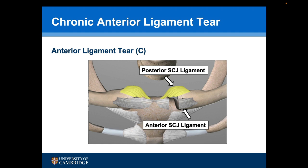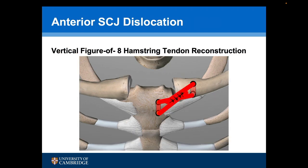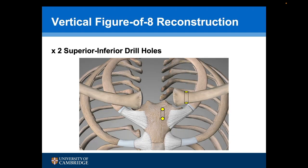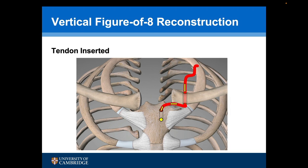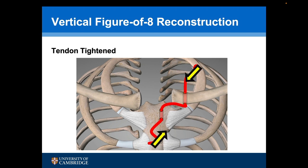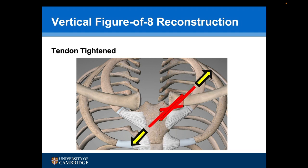The second pattern of injury is where the anterior sternoclavicular ligament has been torn and is not repairable, but the posterior ligament itself is intact. For this I prefer to undertake a vertical figure-of-eight hamstring tendon reconstruction. A 3.5mm superior to inferior drill hole is made in the medial end of the clavicle, and then two drill holes are made on the front of the sternum and joined together to communicate as a tunnel. The tendon graft is then passed through the clavicle from superior to inferior, the end retrieved and passed into the superior sternum drill hole and out of the inferior drill hole. The tendon ends are then pulled together which reduces the joint, then cycled and sutured together.